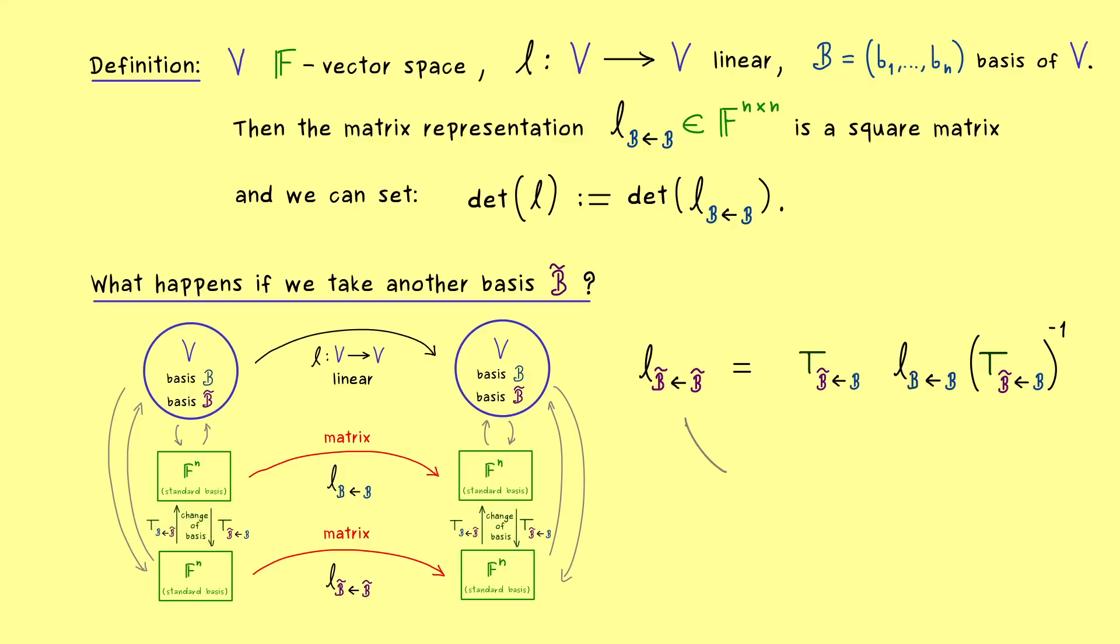Therefore, as we have learned before, this formula tells us, that the two matrix representations are similar matrices. And now it's just a very important fact, that similar matrices always have the same determinant.